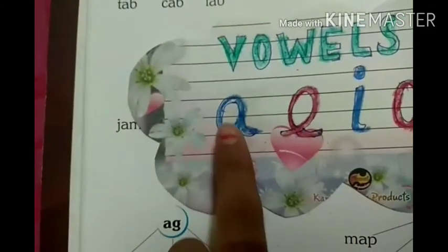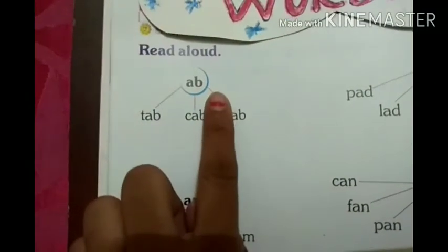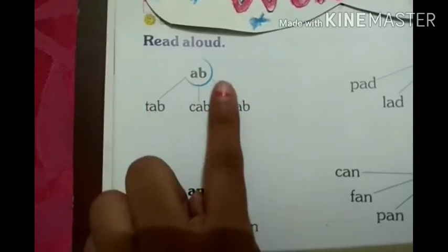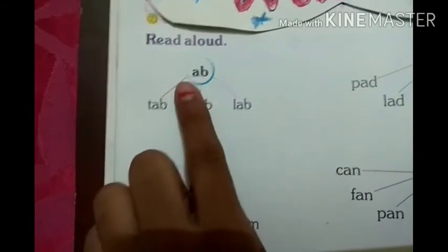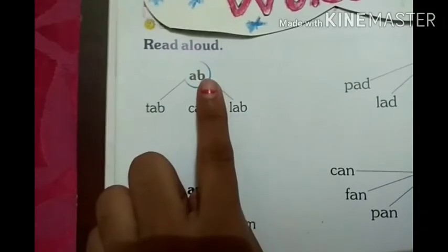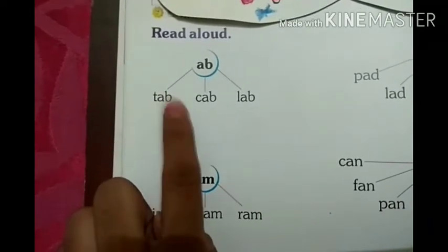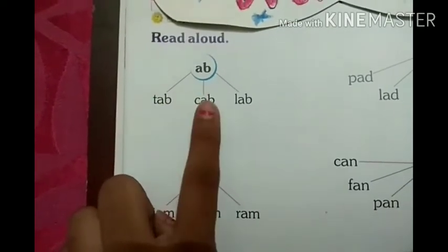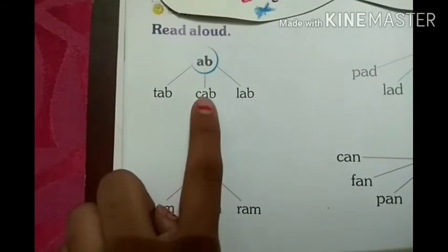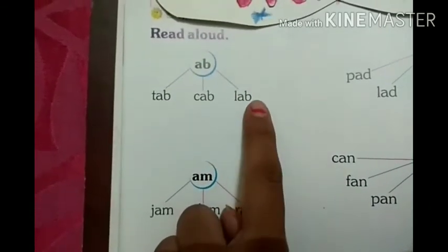Now, with the vowel A, we make the word 'ab'. What is the sound of A? A. And what is the sound of B? B. A, B — AB. What is the sound of T? T. What is the sound of C? K. A, B, A.